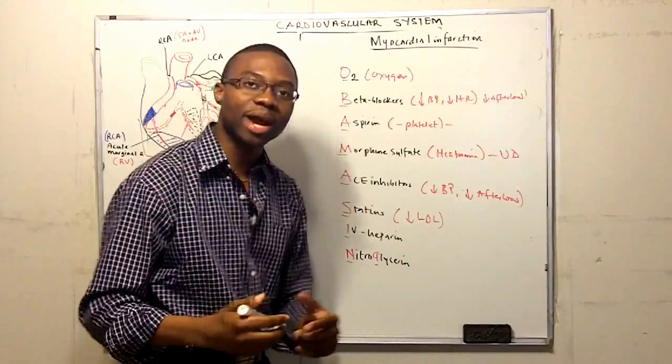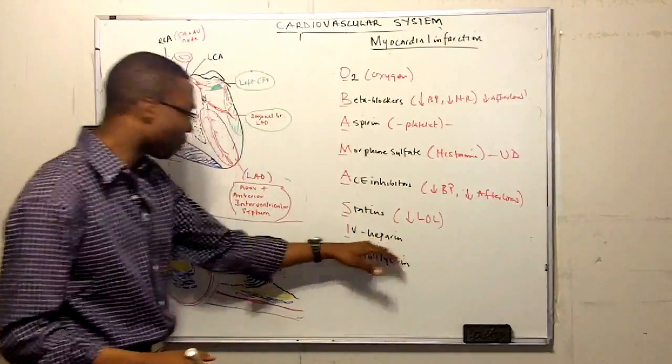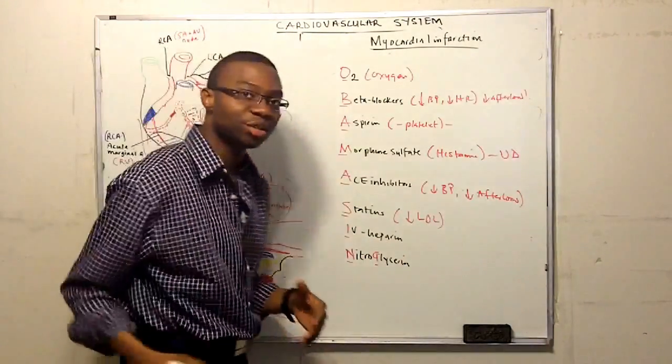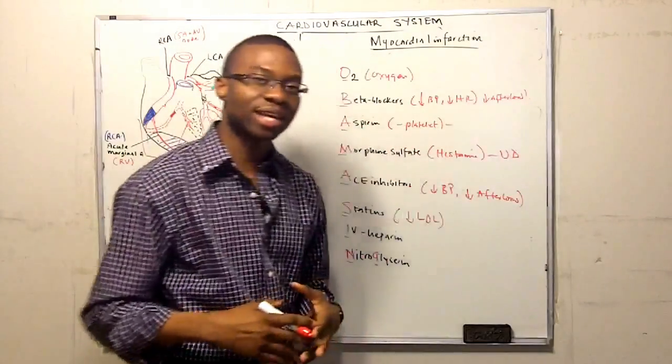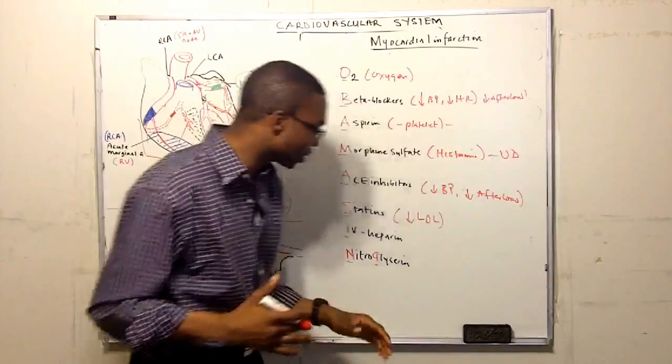You want to start on Heparin. Heparin is going to help antithrombin-3 to prevent you from clotting. Remember the clotting cascade, go watch the video, I've made one on that.